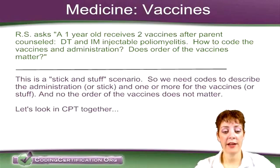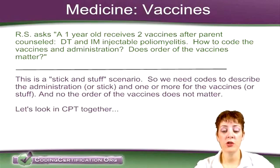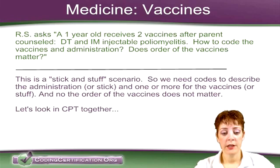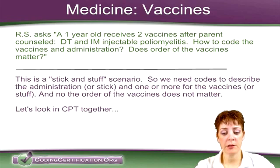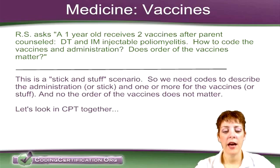Medicine section: vaccines. A one-year-old receives two vaccines after the parent was counseled — DT and IM injectable poliomyelitis. How to code vaccines and administration.